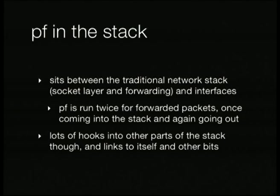PF in OpenBSD sits between the traditional network stack — the bit of the kernel that processes incoming or forwarded connections — and the interfaces the packets are received or transmitted on. PF is run twice for forwarded packets: as a packet comes in off an interface, it goes through PF to enter the stack, and once finished being processed by the stack, it's sent to PF on the outgoing path. So if you're routing, you have to write rules on both sides of the box. There are also many hooks from PF into other parts of the kernel, such as looking up user IDs of connecting processes, which requires some layer violations.